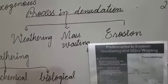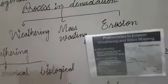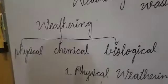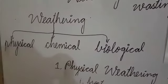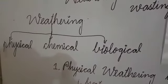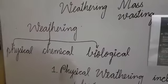Now let's talk about the types of weathering. There are three types of weathering: the first one is called physical weathering, chemical weathering, and biological weathering.